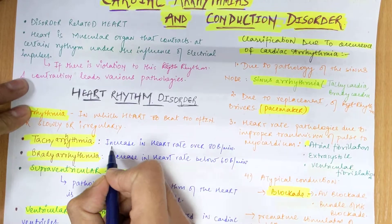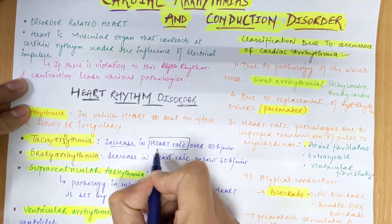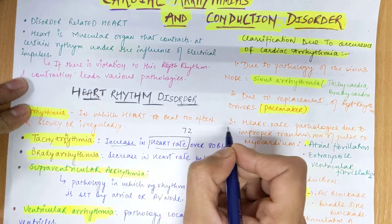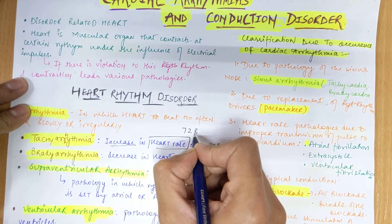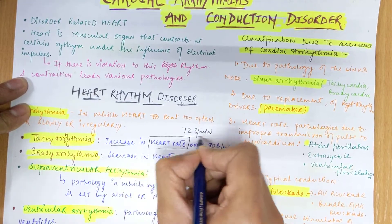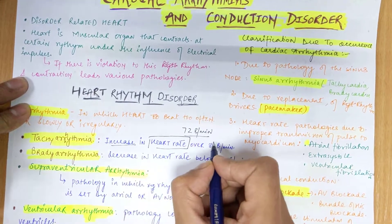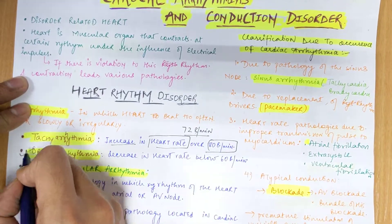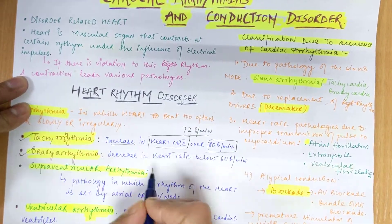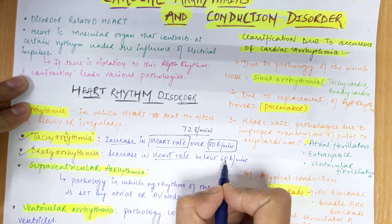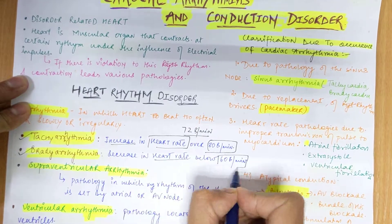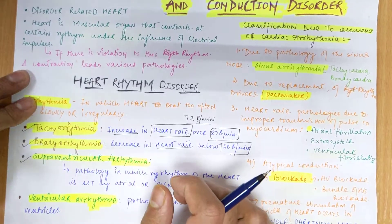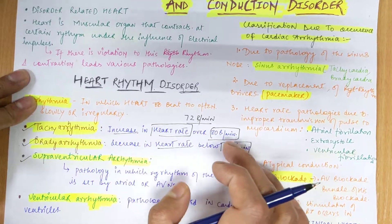The first case is tachyarrhythmia, where there is an increase in heart rate. The normal heartbeat is 72 beats per minute, so in tachyarrhythmia it can go above 80 beats per minute. In bradyarrhythmia there is a decrease in heart rate, and it can go below 60 beats per minute.